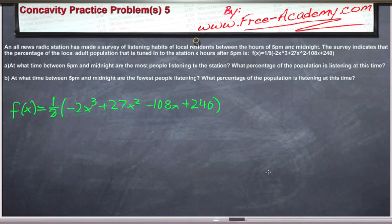At what time between 5 pm are the most people listening? This is asking us for a maximum. And what percentage of the population? So it's actually asking the point or the y value. And at what time between 5 pm and midnight are the fewest people listening? This is a minimum. And what percentage? This is going to be the y value again.